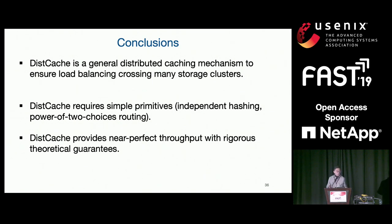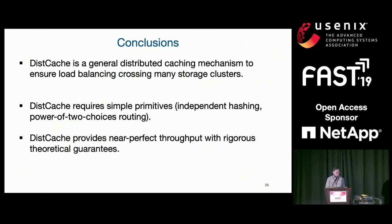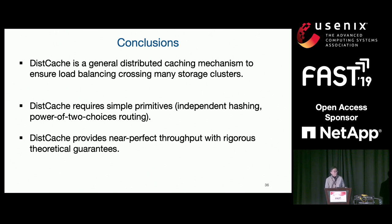To conclude: disk cache is a general distributed caching mechanism to ensure load balancing across many storage clusters. It requires simple primitives — just independent hashing and power-of-two choices for routing. Disk cache provides near-perfect throughput with rigorous theoretical guarantees. Thank you very much.